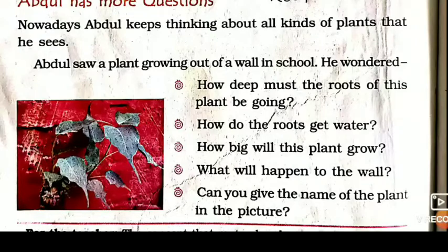Abdul saw a plant growing out of a wall in school. He wondered — when he went to school he saw a plant coming from the wall. He had seen plants in gardens and in the ground before, but now he saw a plant growing from the wall.